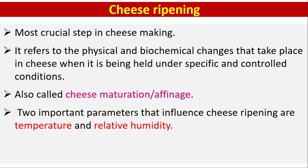Cheese ripening is the most crucial step in cheese making. It refers to the physical and biochemical changes that take place in cheese when it is held under specific and controlled conditions. It is also called cheese maturation or affinage. Two important parameters that influence cheese ripening are temperature and relative humidity.